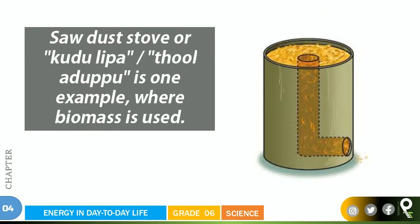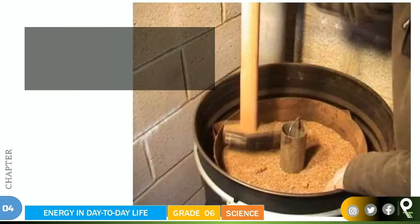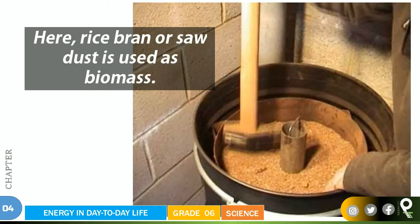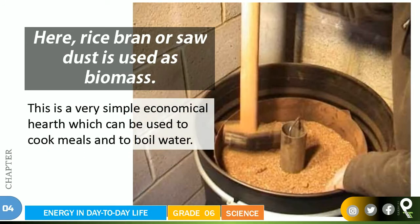A sawdust stove, or kudulipa as it is called in Tamil, is one example where biomass is used. You can see sawdust packed around a tube. You can easily make this at home and be a helpful child to your mother and father. Rice bran or sawdust is used as the biomass fuel. This is a very simple, economical hearth which can be used to cook meals and to boil water.